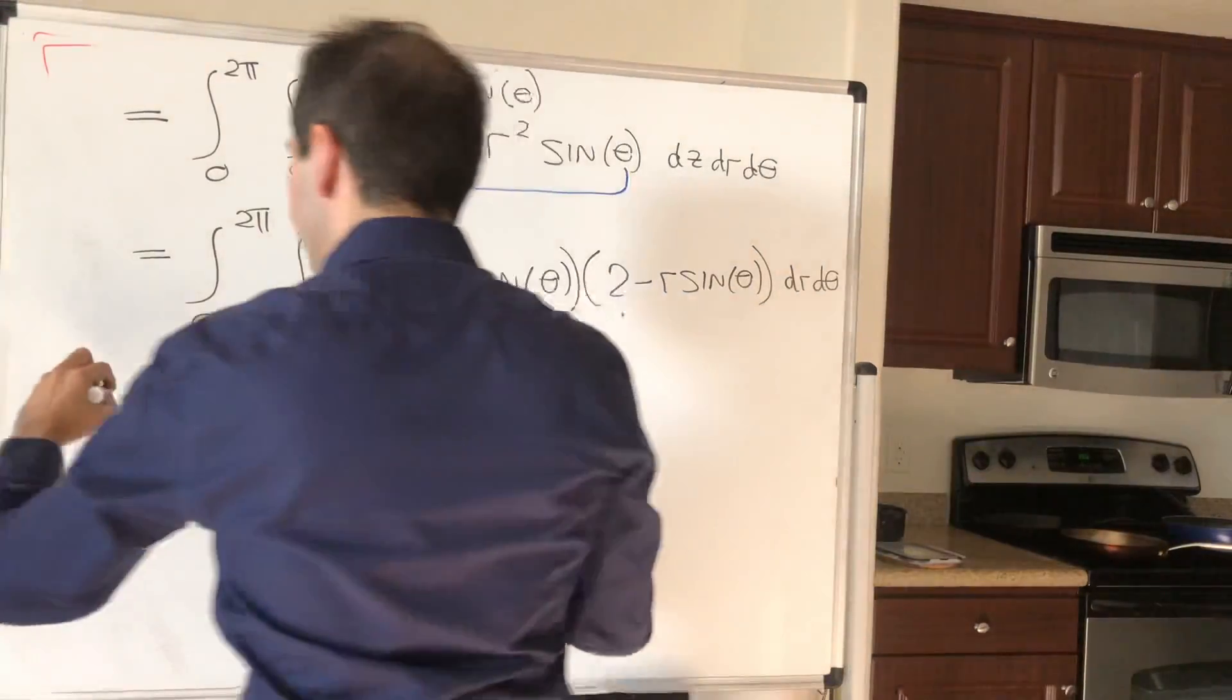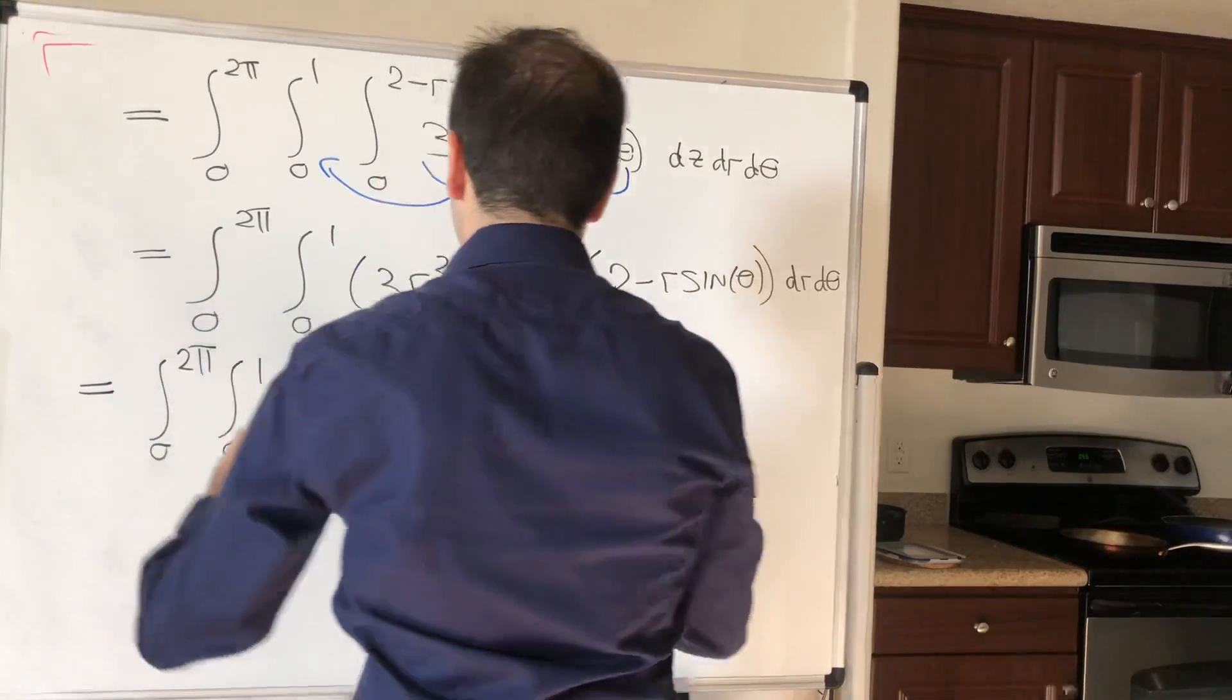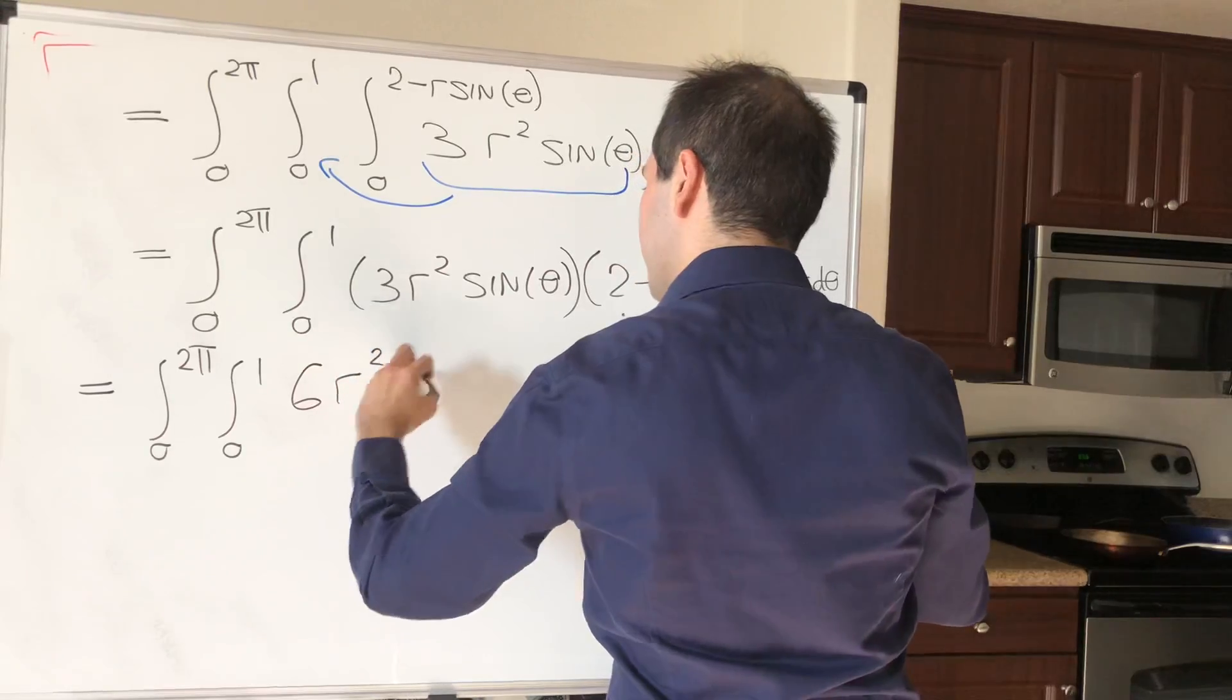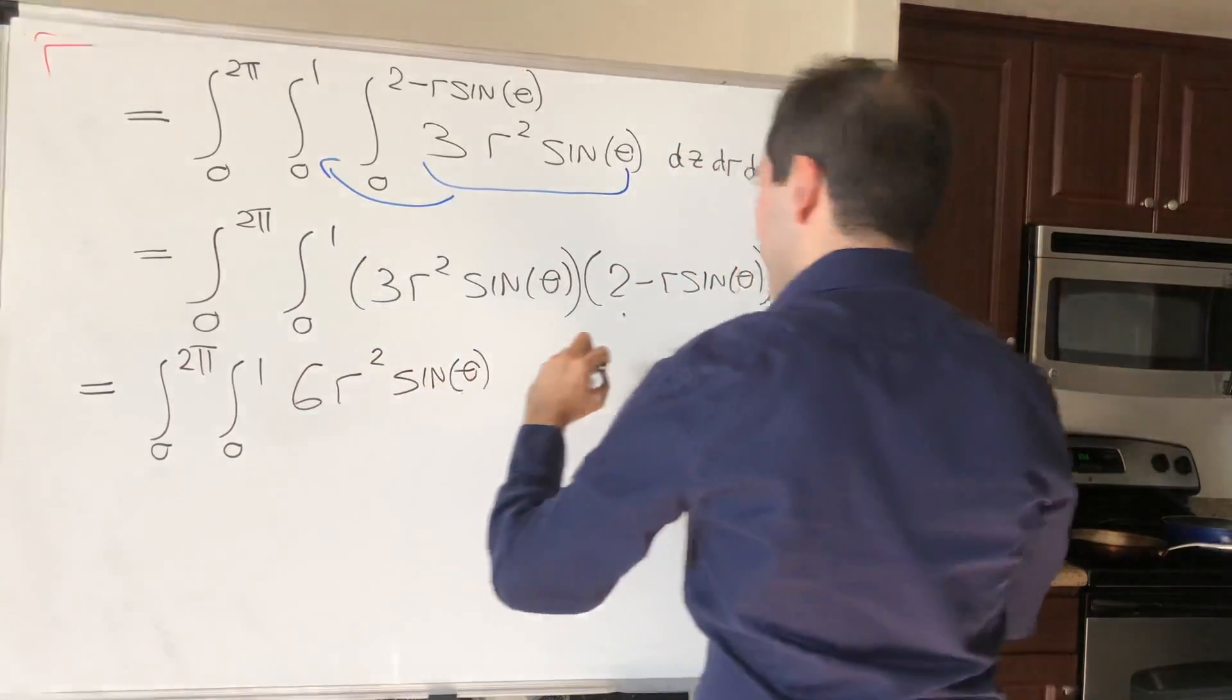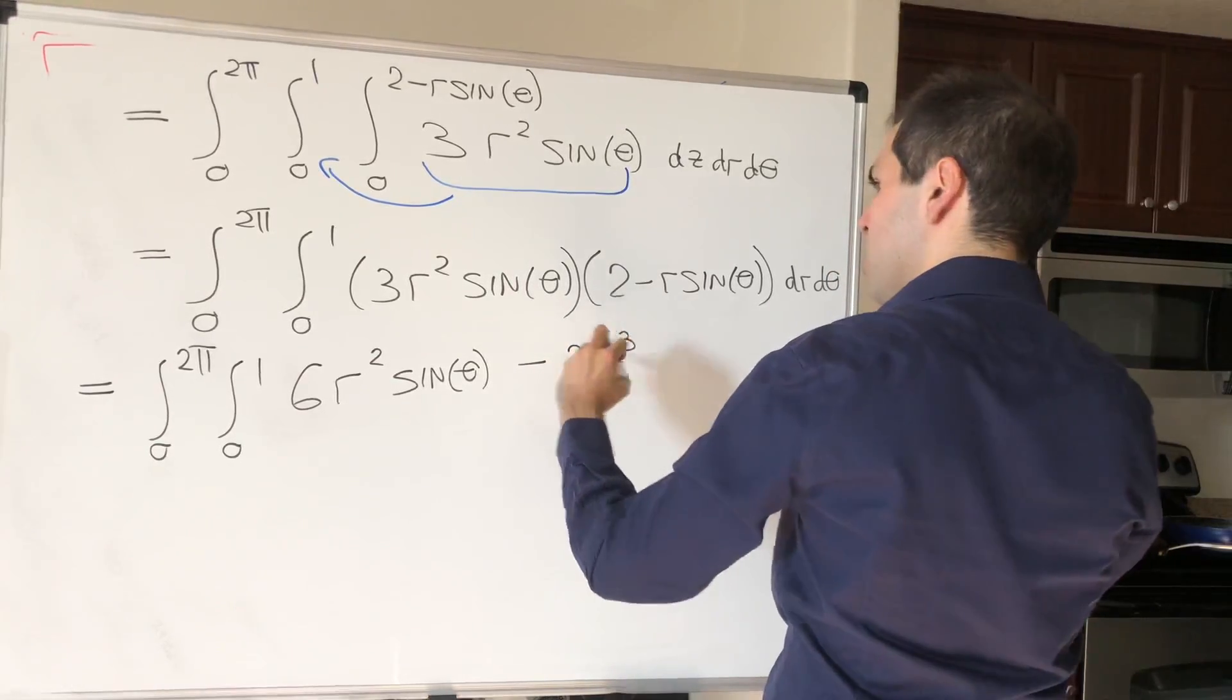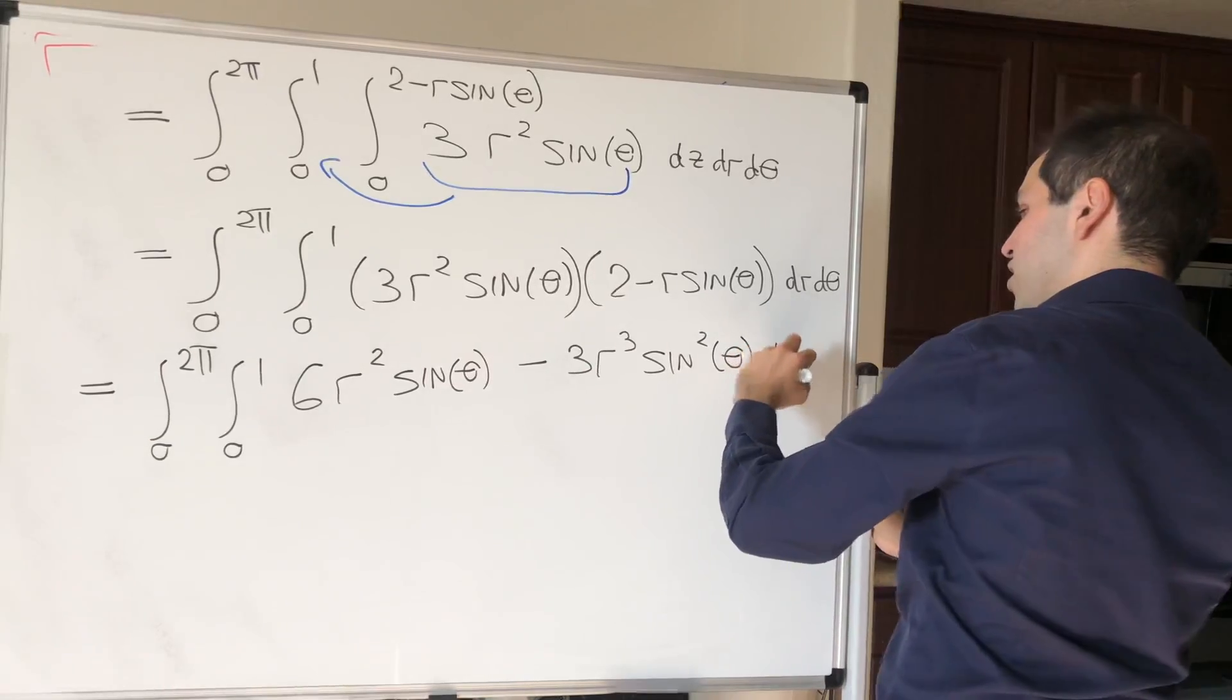So this becomes integral from 0 to 2 pi, integral from 0 to 1, so I believe 6r squared sine of theta, and then minus 3r cubed, and then sine squared of theta, again dr d theta.